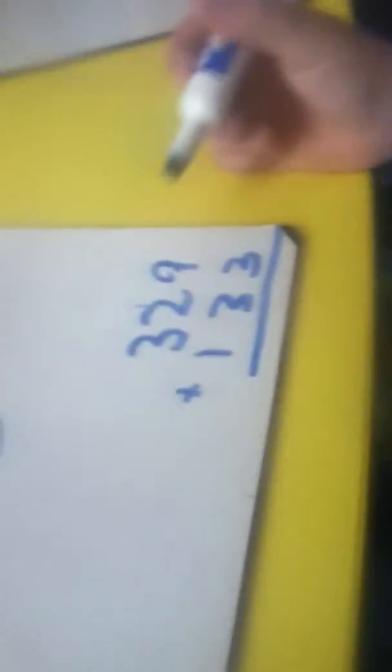329 plus 133. I mean 9 plus 3 equals 12, so you carry the 1.